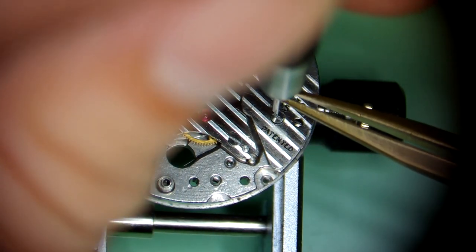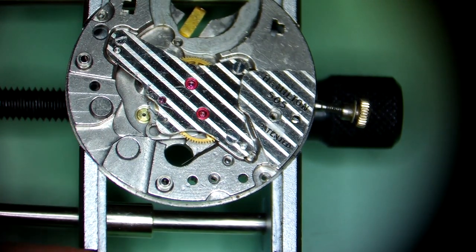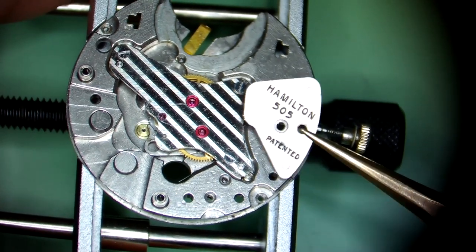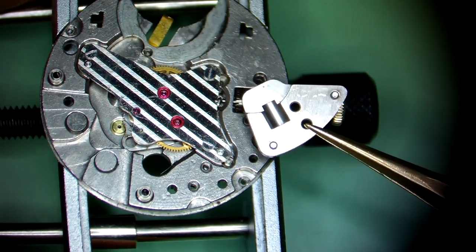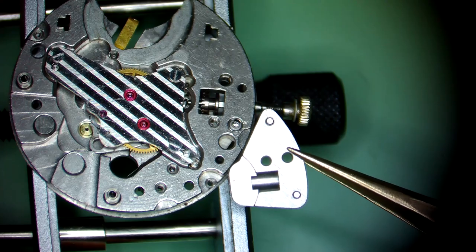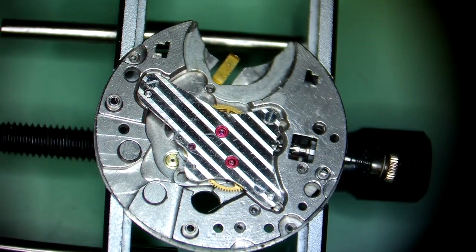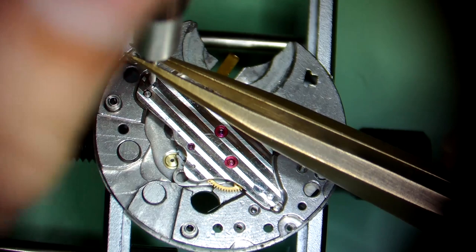Heading into the keyless works, they are also simplified because there's no winding of this watch, so there's no gear in there for winding, no intermediates, nothing like that.